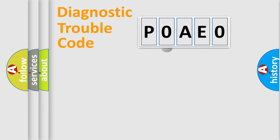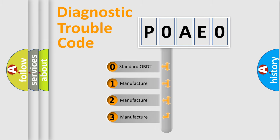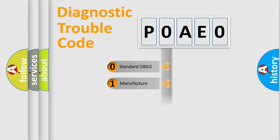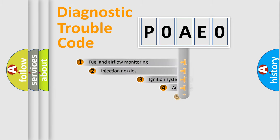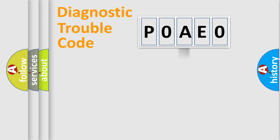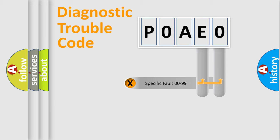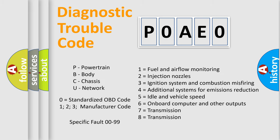This distribution is defined in the first character of the code. If the second character is expressed as zero, it is a standardized error. In the case of numbers 1, 2, or 3, it is a more specific expression of a car-specific error. The third character specifies a subset of errors. This distribution is valid only for the standardized DTC code, and only the last two characters define the specific fault of the group. Note that this division is valid only if the second character code is expressed by the number zero.